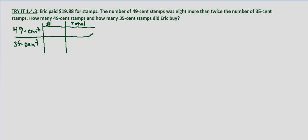So I've written down this little table here. I've got it divided up into the type of stamps: 49-cent stamps and 35-cent stamps. For the number of 49-cent stamps, let x equal the number of 35-cent stamps.